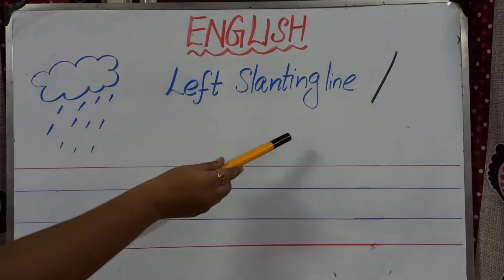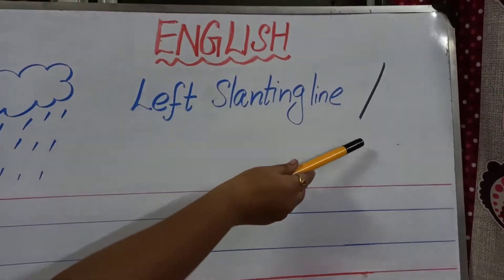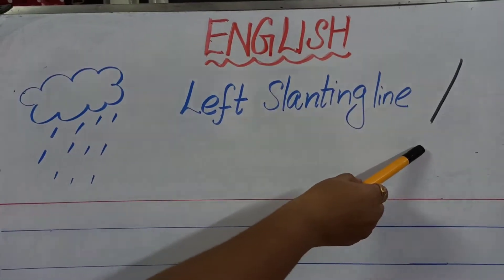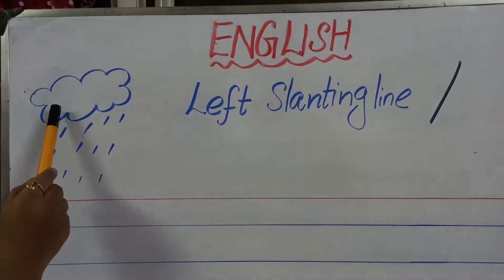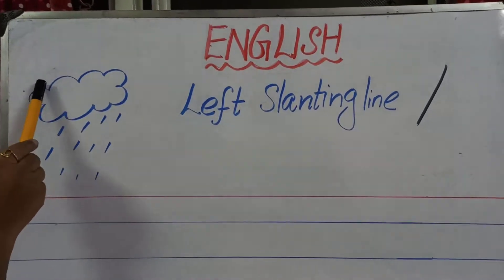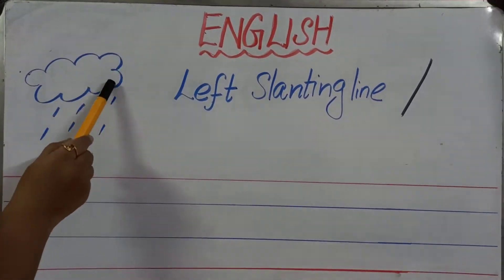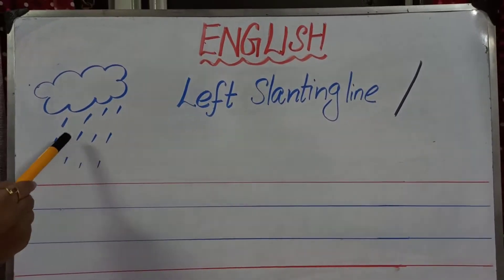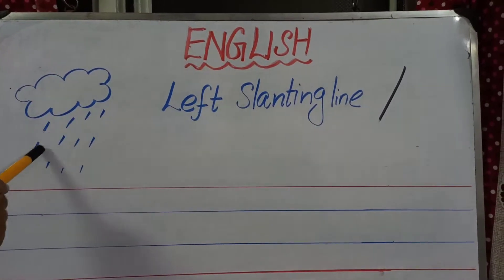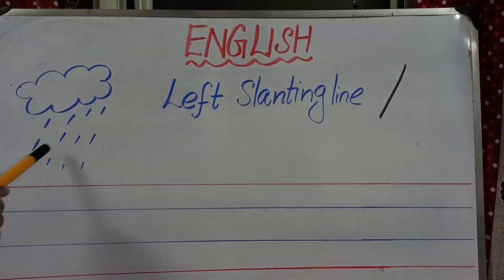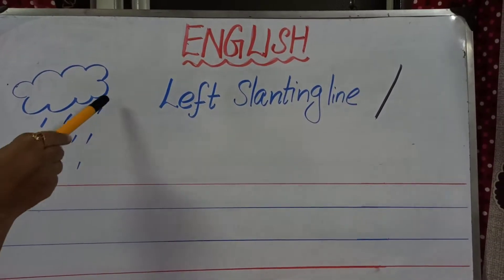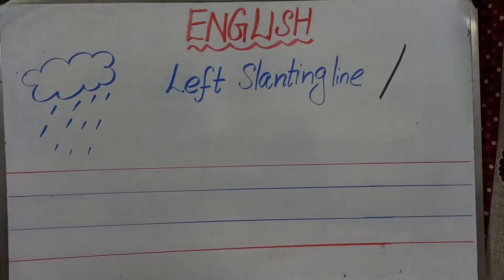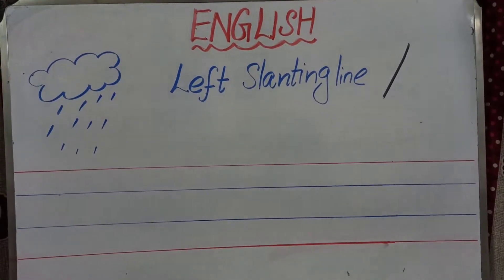Can you all see here? This is called left slanting line, and I have given an example here. Can you see the clouds here? And we have raindrops here. The rain always pours in the slanting line direction.